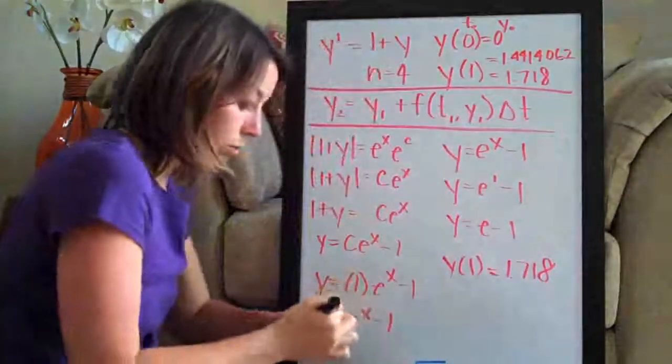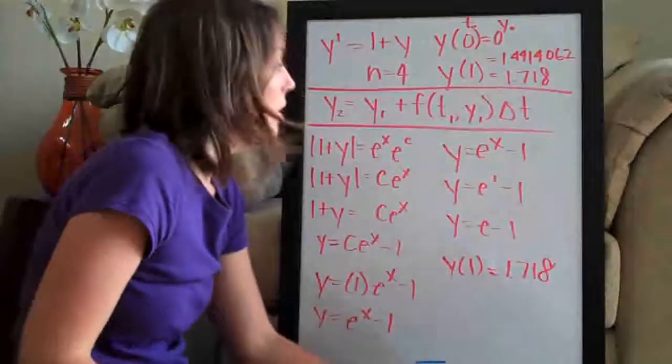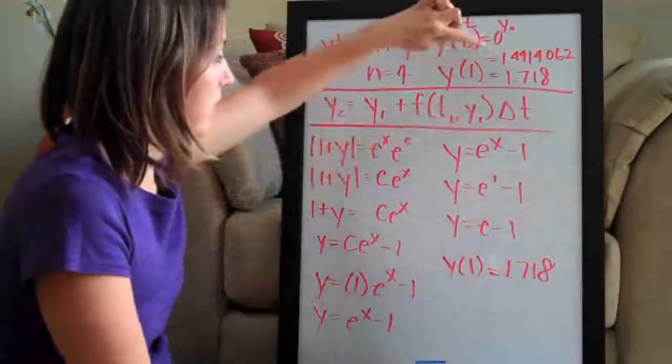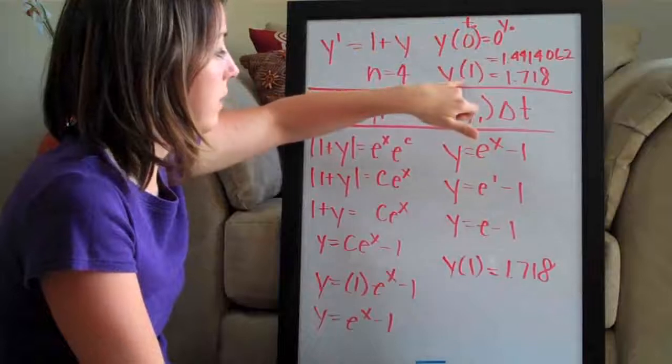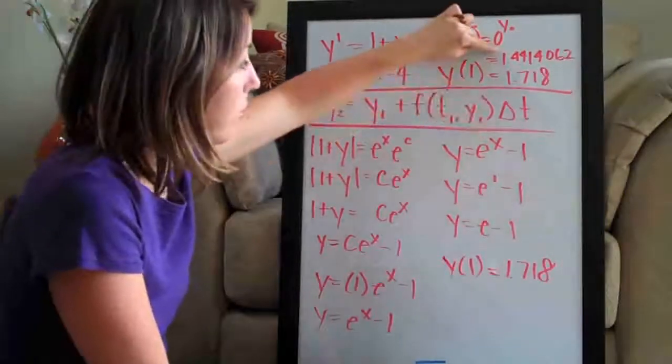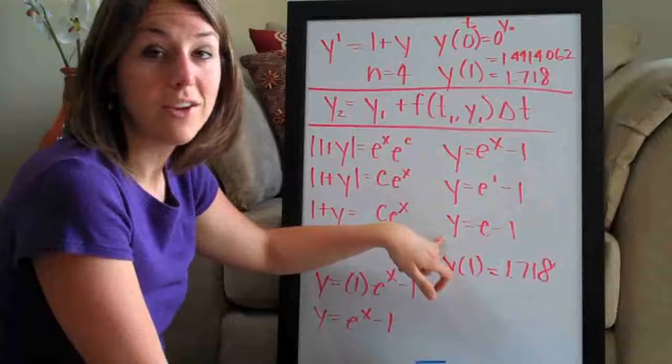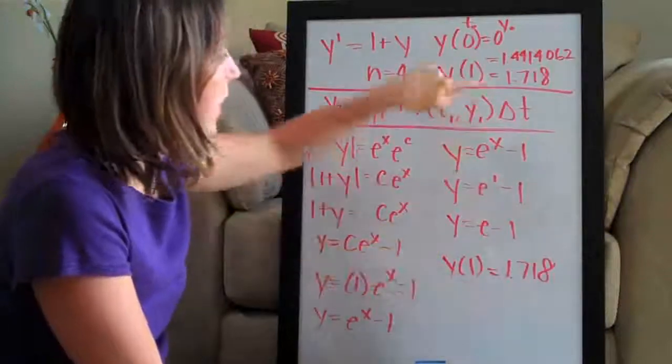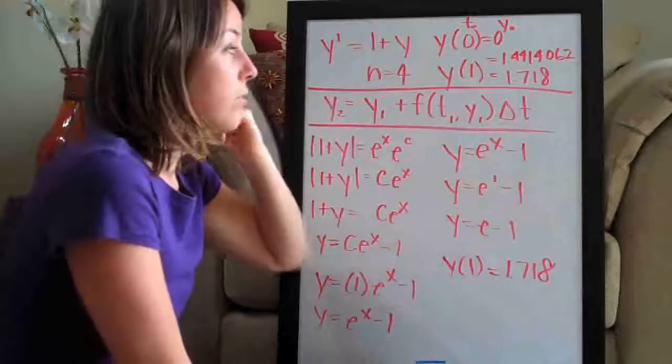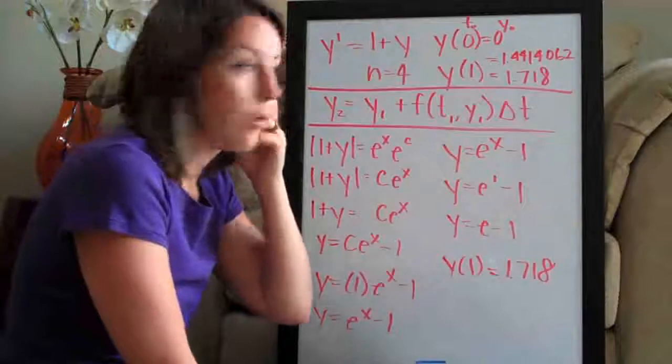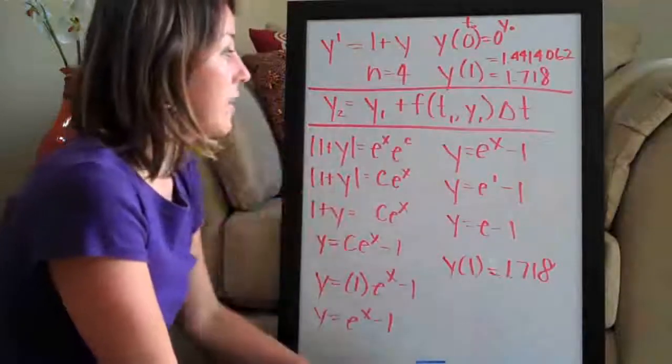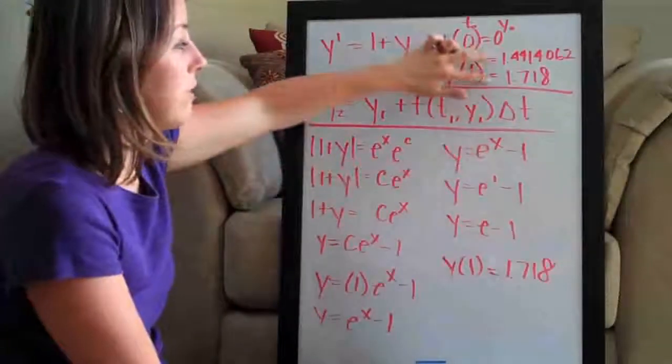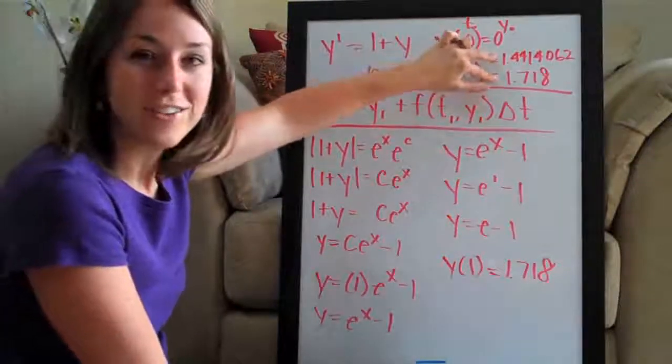So those are two methods for solving this equation. The first is computing the approximation of the point with Euler's method, you get 1.44. The second is actually solving it with calculus and plugging in the point and you get 1.718. Those are close enough that I feel comfortable that we did both of these steps correctly and we don't need to check our work. So these two right here are your final answers. Thanks guys.